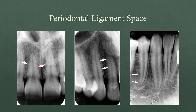The periodontal ligament space is ideally seen as a nice, thin, uniform, radiolucent line around the teeth. The white line outside it is what we call the lamina dura — a thin plate of bone that surrounds the tooth and the periodontal ligament. The lamina dura may be thicker or more radiopaque in some cases, and in other cases you don't see it much at all or it may be hard to follow. That doesn't always mean pathology, but when you see that periodontal ligament expanding and becoming more radiolucent, that's a good sign it could be a source of infection or some other type of lesion.